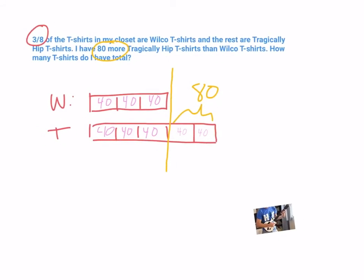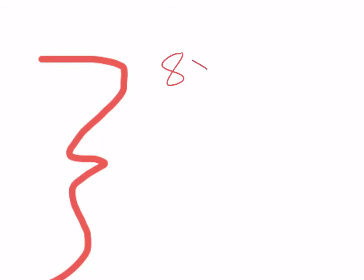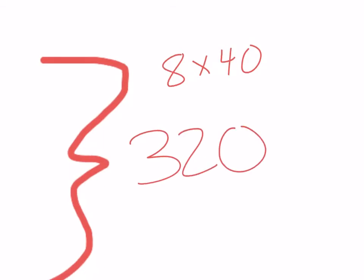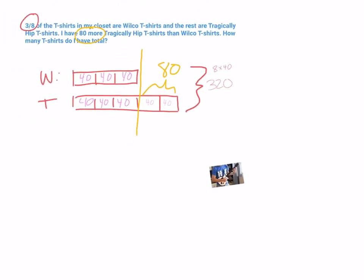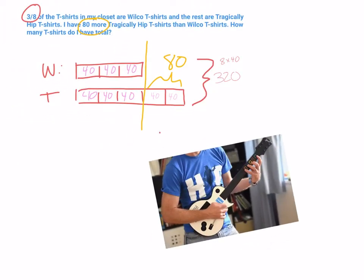Now we can answer the question, because we need to find out how many t-shirts total. That's going to be all t-shirts. How many blocks did we have? 8 blocks, times 40. If you know 8 times 4 is 32, then 8 times 40 is 320. So I've got 320 t-shirts.